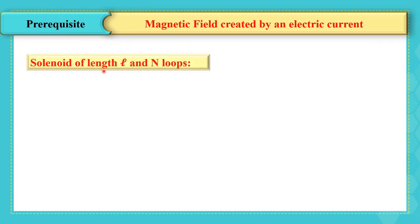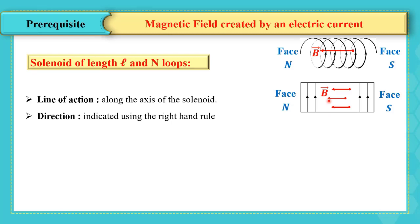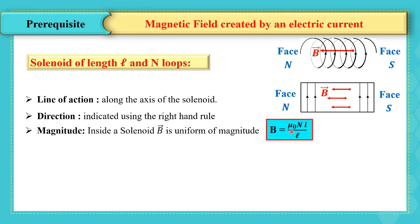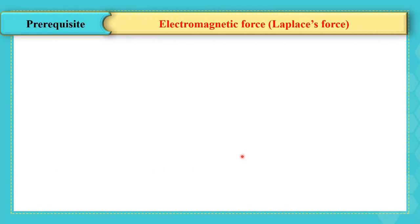In the case of a solenoid of length L and N loops, the magnetic field created inside has its line of action along the axis of the solenoid. The direction is indicated using the right-hand rule — the thumb indicates the direction of B while the curved fingers take the direction of the current. The magnitude inside the solenoid is uniform and equal to B = μ₀NI / L, where I is the current in amperes, μ₀ is the permeability in vacuum or air, and L is the length in meters.